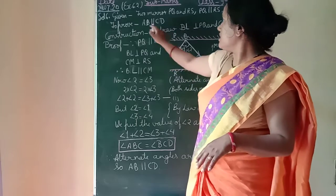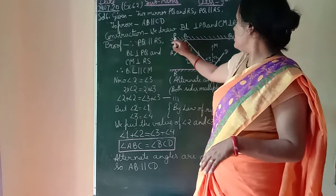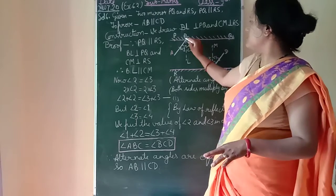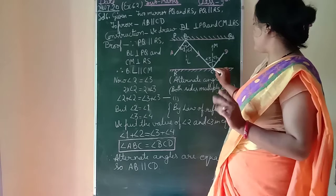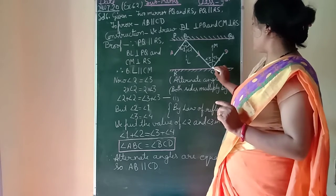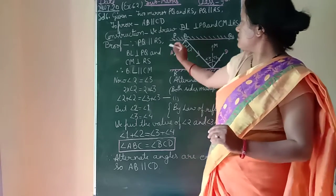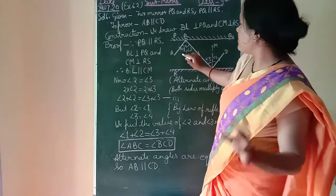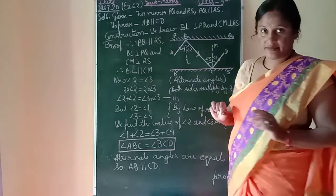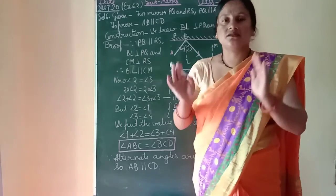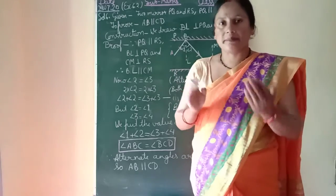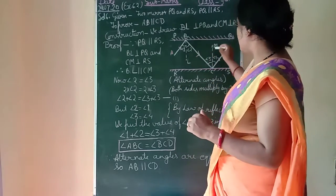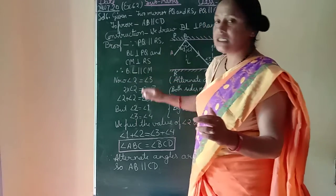We draw BL perpendicular to PQ, and CM perpendicular to RS. Since PQ is parallel to RS, perpendiculars drawn between two parallel lines are also parallel to each other. Therefore, BL is parallel to CM.